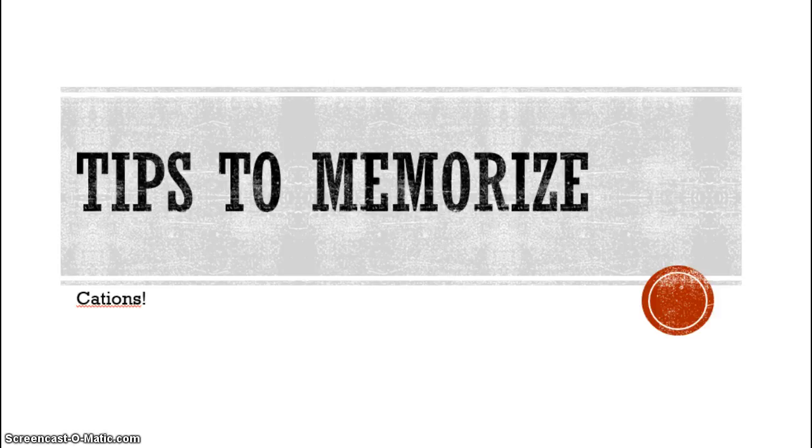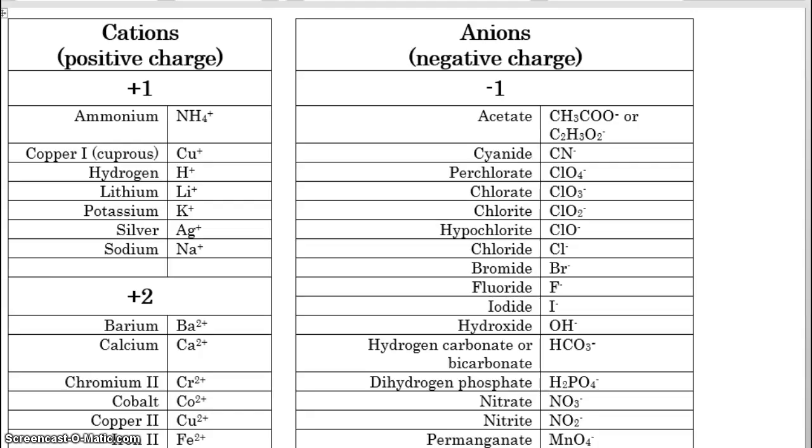Here are some tips to memorize cations. Yes, we have to memorize a few more things. Go to problem book page 407, and you will see the list of cations. Those are positive ions. Remember, cations are positive. I love that. And anions are negative. And today's video, we're going to just talk about the cations.